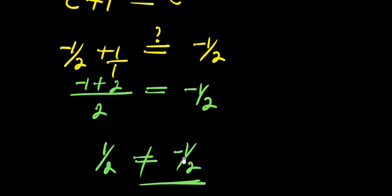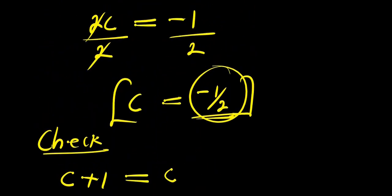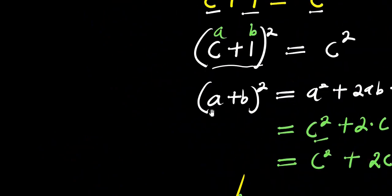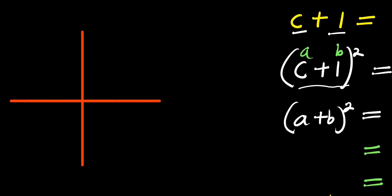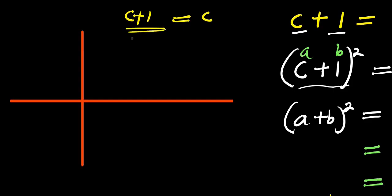So this means the answer we have is wrong. Let me explain why by plotting a graph. The graph of √(c+1) is an increasing function.